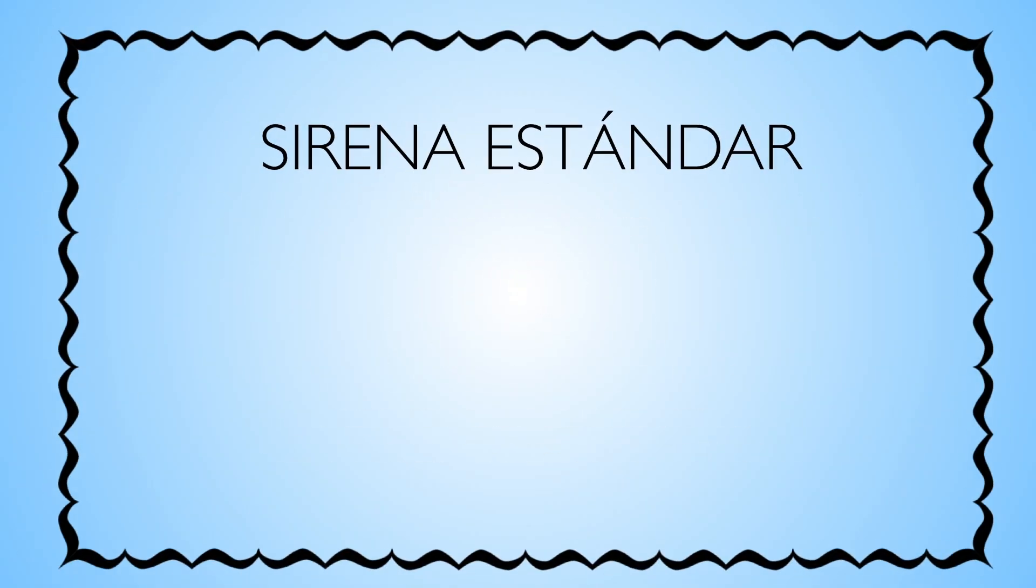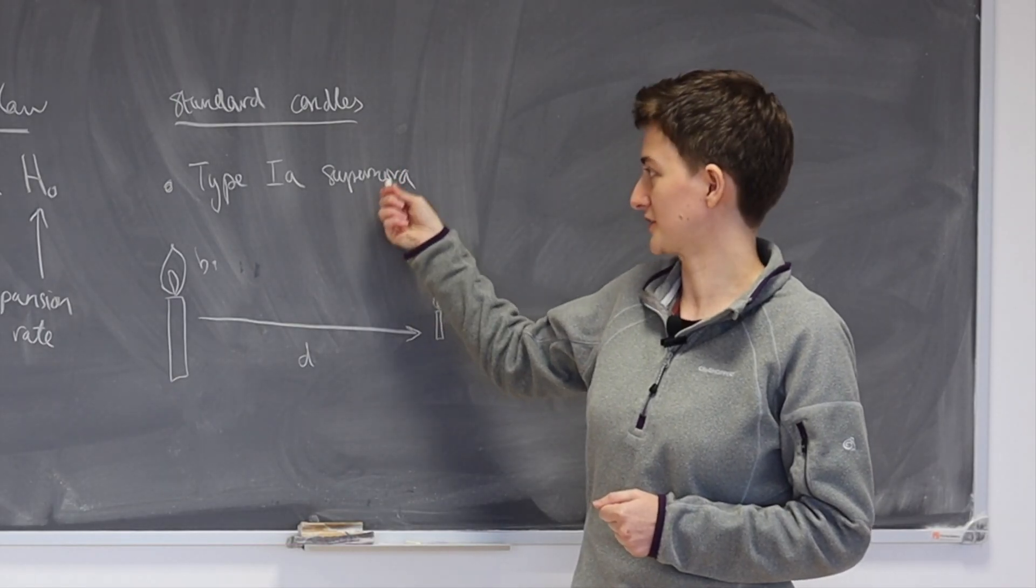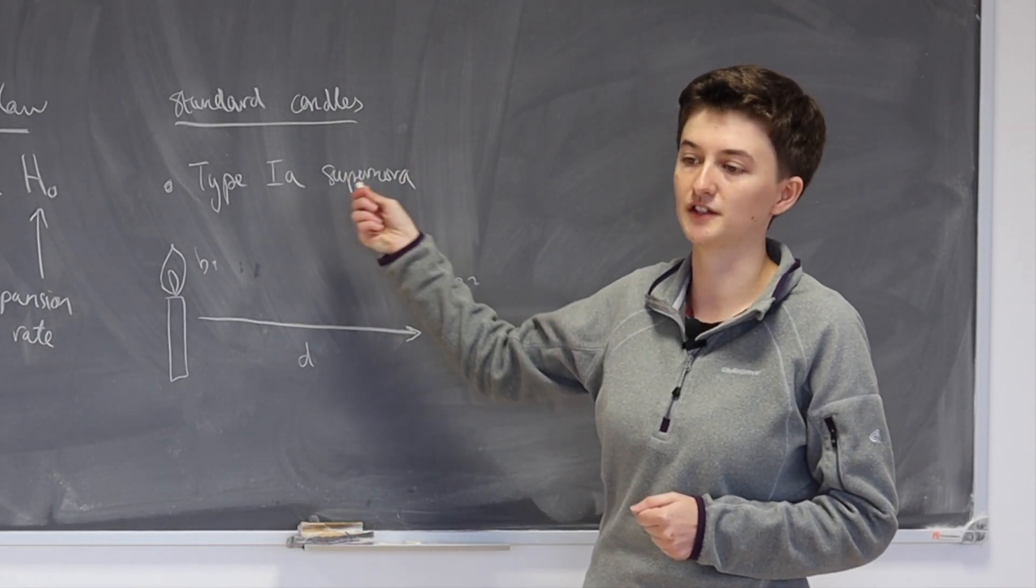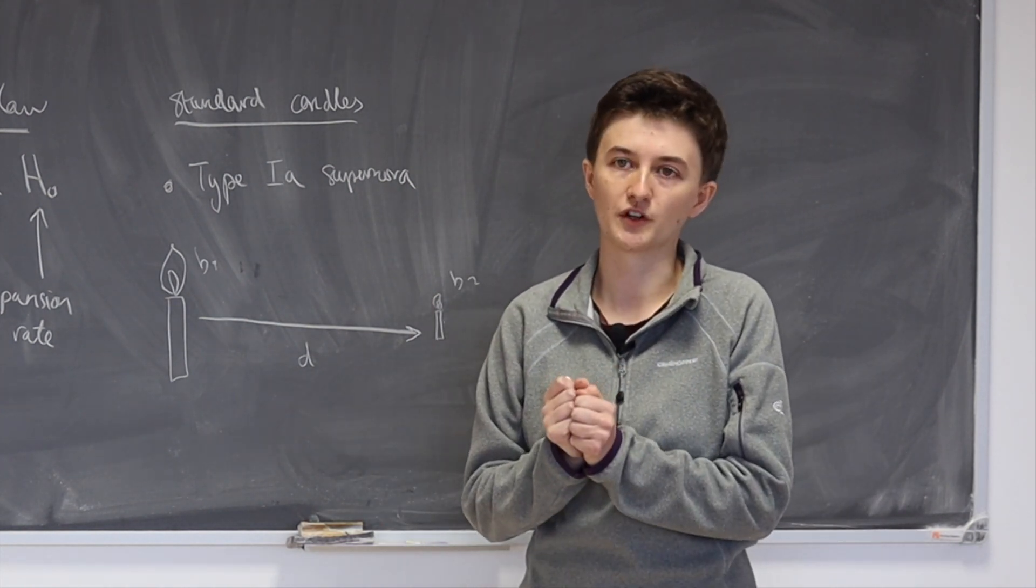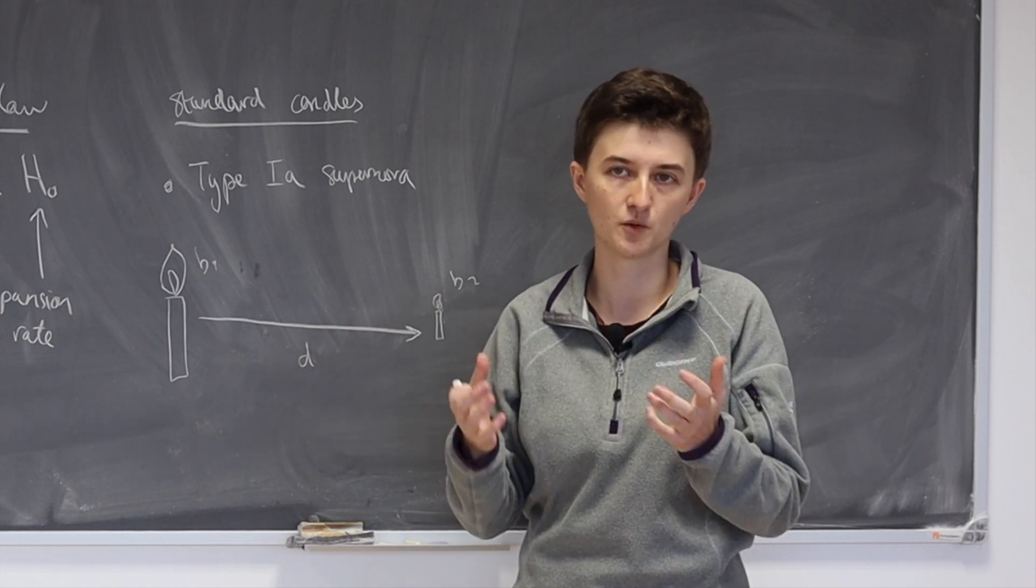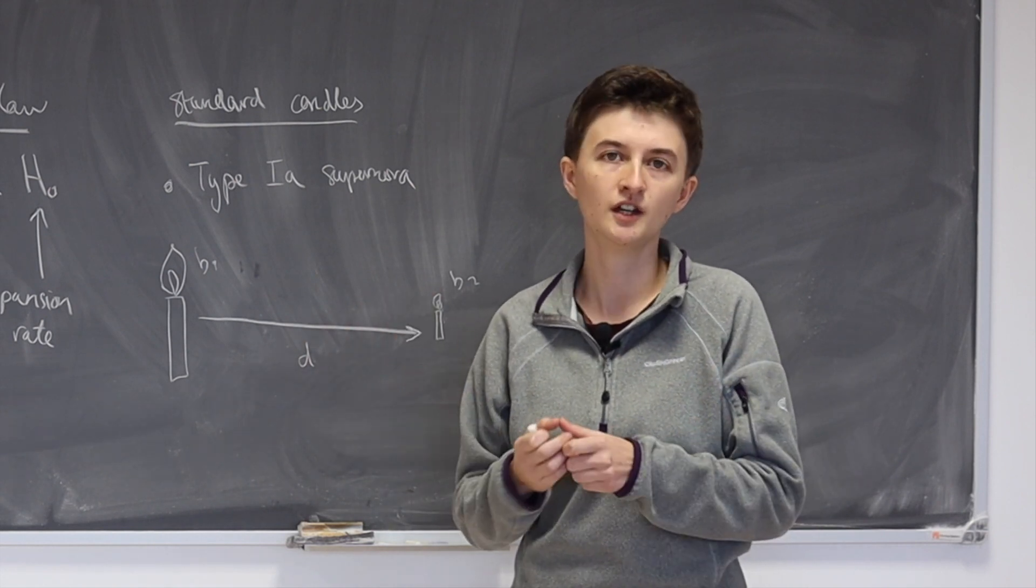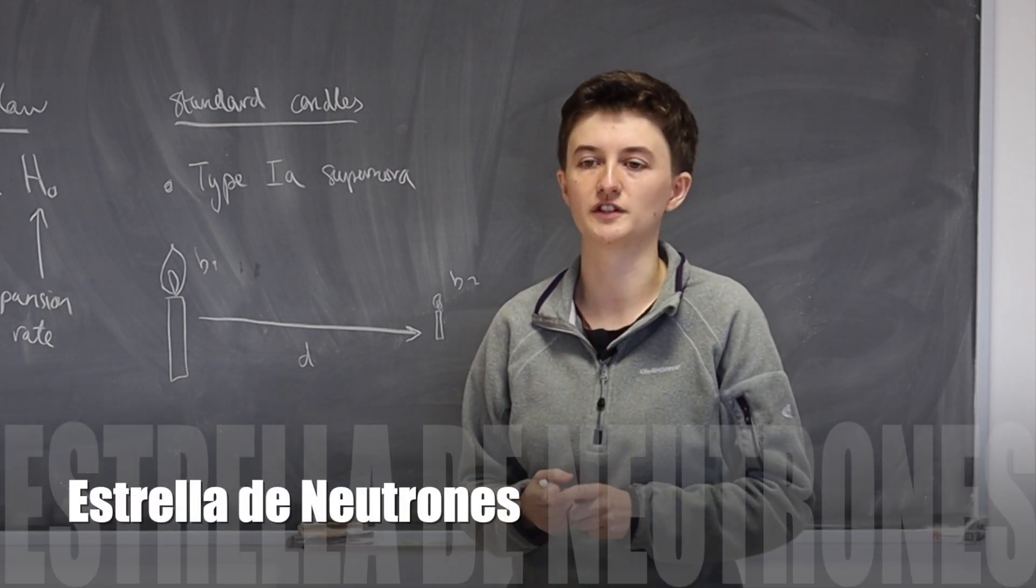So what about standard sirens? Now this is a bit different. So at the end of a star's lifetime, as I said, you can have this supernova explosion. But what's left behind is also very interesting. So again, depending on the initial mass of the star which is undergoing this explosion, you can form something called a neutron star as the remnant of the explosion.